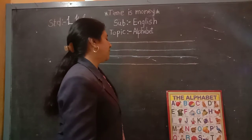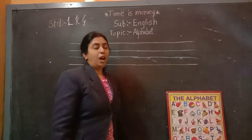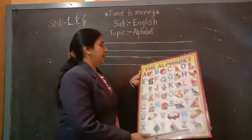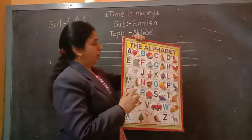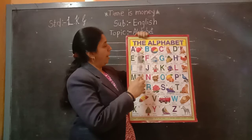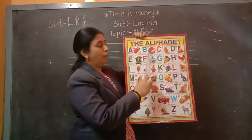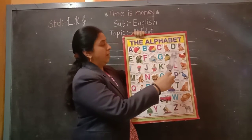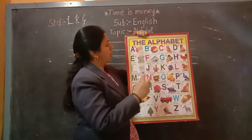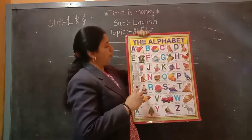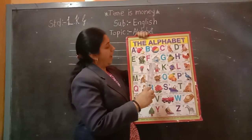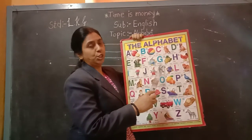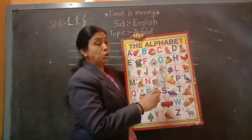In last class, you have learned how to read and write capital and small A for apple, B for ball, C for cat, D for dog, E for elephant, F for fish.